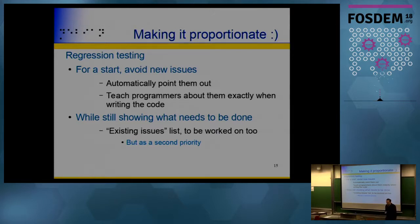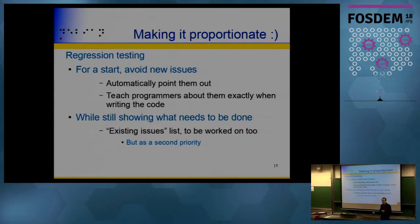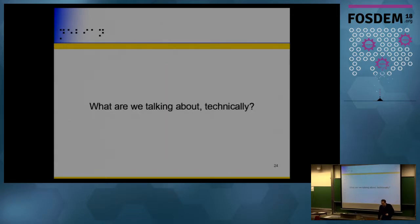We propose regression testing. There are two goals: first, avoid introducing new issues — while the programmer is coding, tools should flag problems and explain how to fix them, so the programmer learns and won't repeat mistakes. Second, make sure new issues don't appear while we still work through existing ones. Fixing new regressions is the first priority; the backlog of old issues is second.